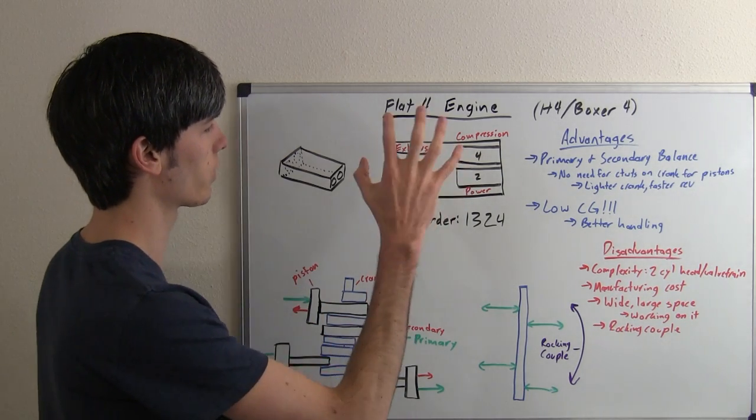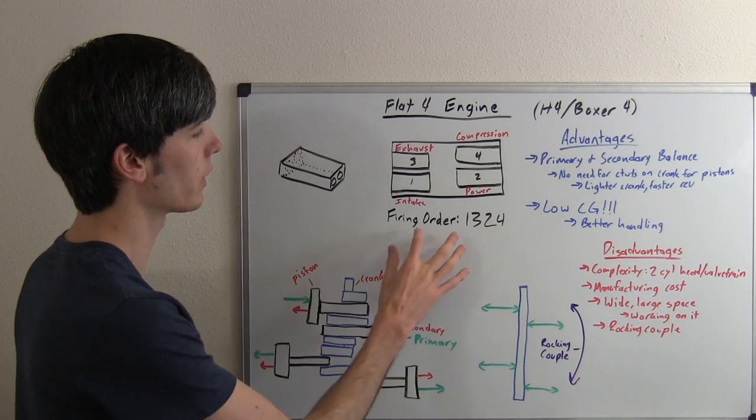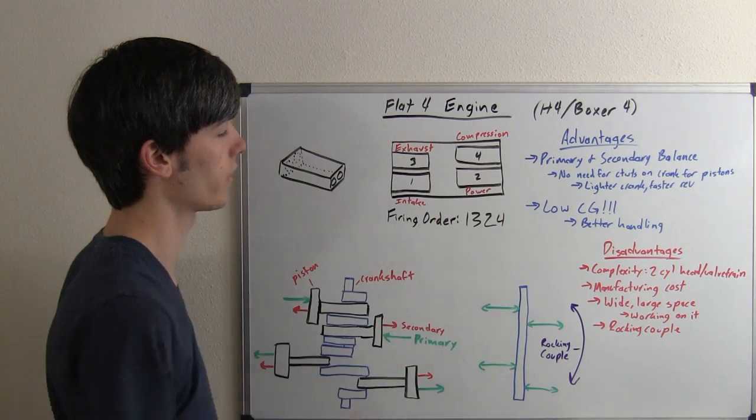If you're looking down at the engine, you've got cylinders 1, 2, 3, and 4. Your firing order is going to be 1, 3, 2, 4. So this cylinder, this cylinder, then this cylinder, and then this cylinder.